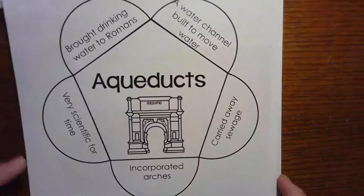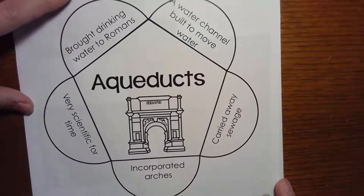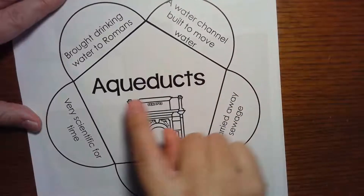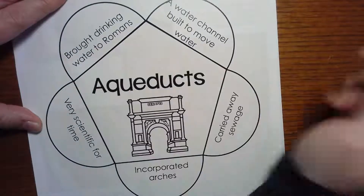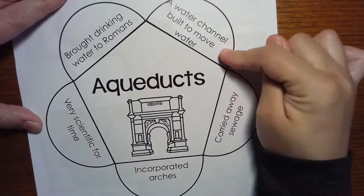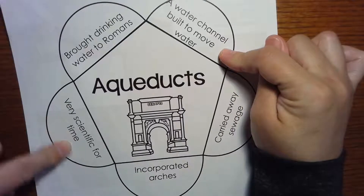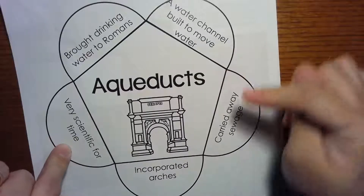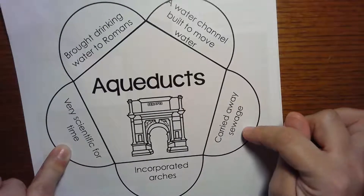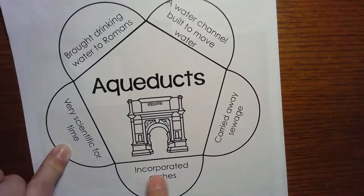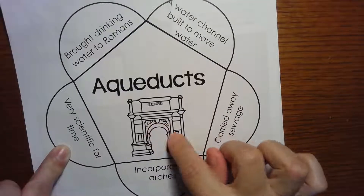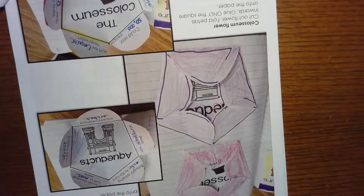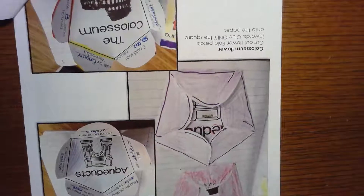Here's another page that you have — these were a really important invention: the aqueducts. They brought drinking water to the Romans. It was a water channel built to move water — very scientific for its time. It also carried away sewage or wastewater, and it incorporated arches, so we have this Roman architecture present in the aqueducts too. Remember, just go back and pause the video to find what you need.